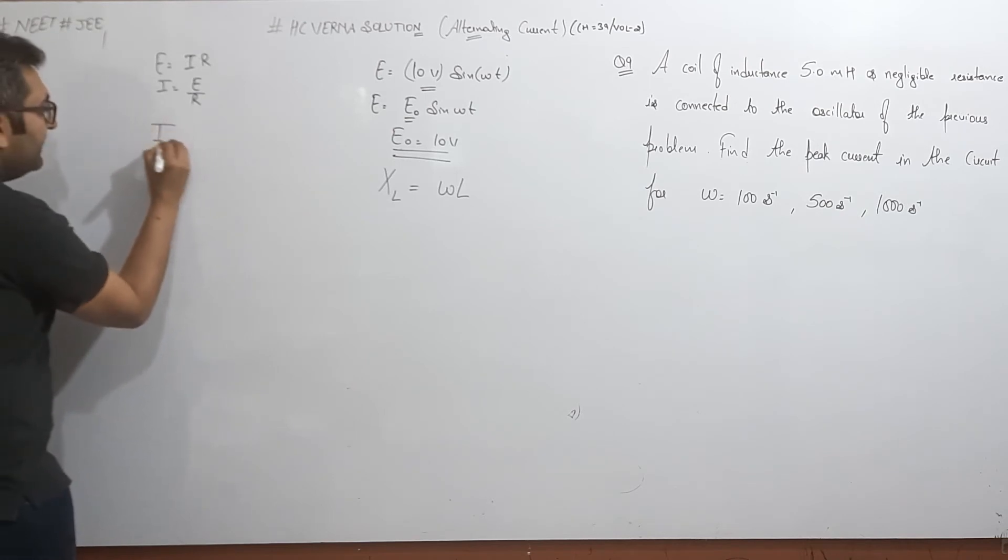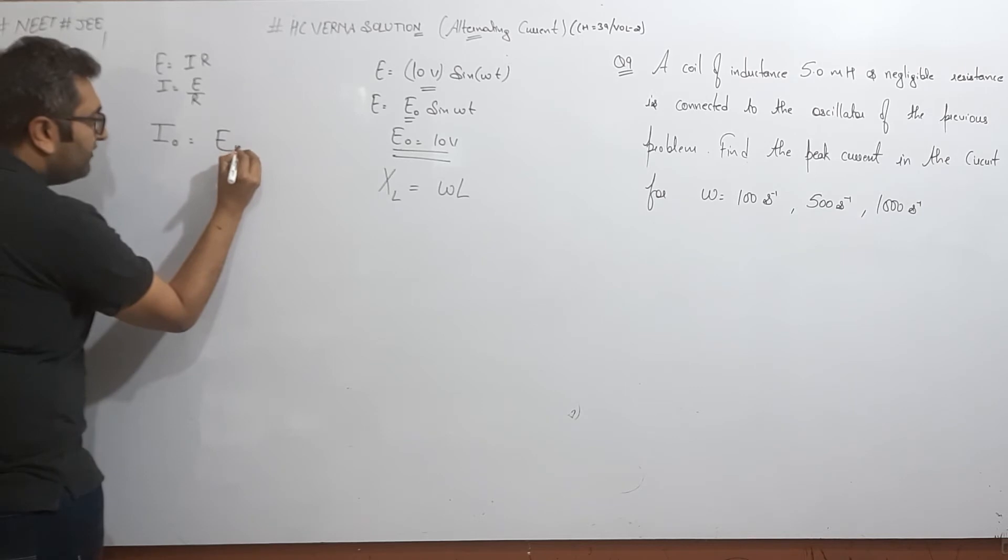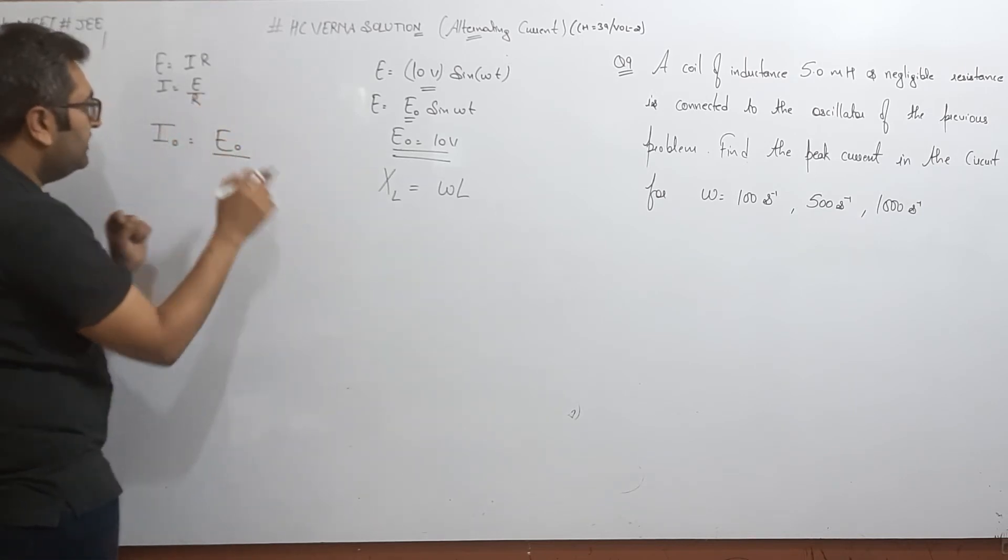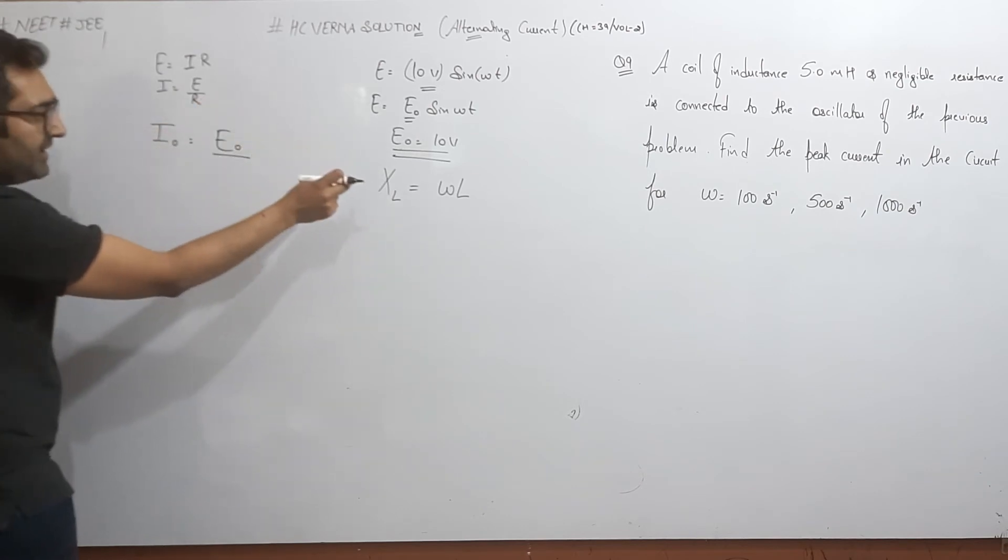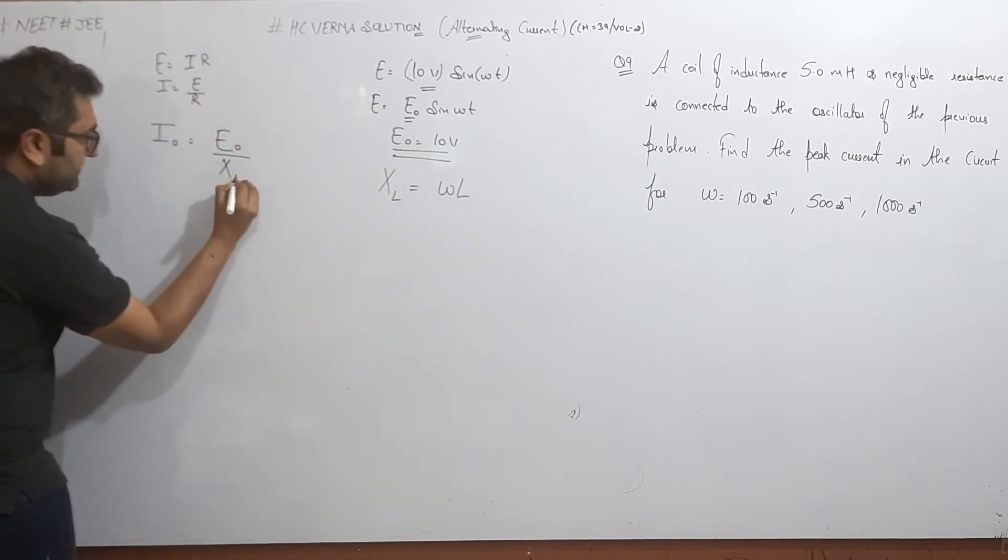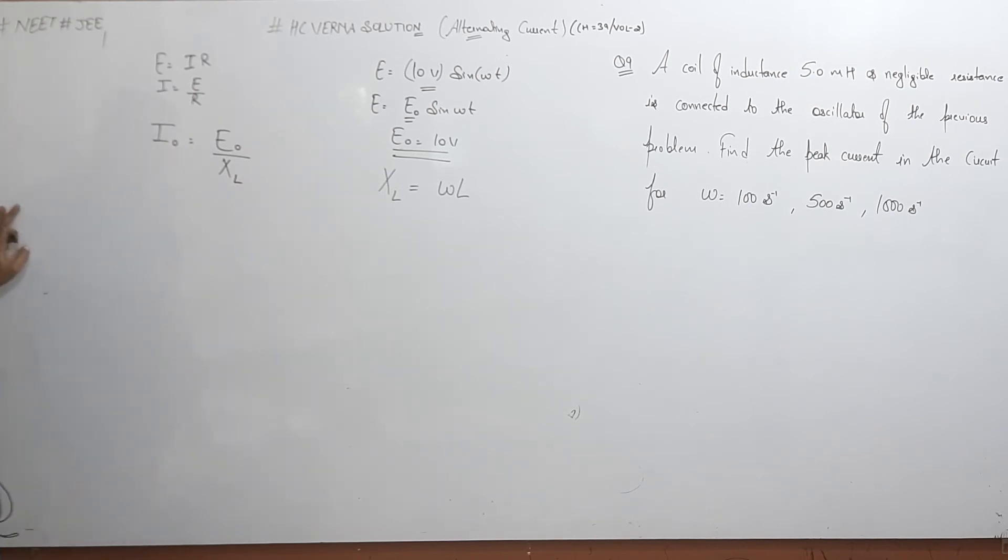And here we have to remove peak current. So peak current ke liye aapko voltage le leni padegi, peak voltage, aur jo resistance current ko rokne wala hai, that will be the resistance. Isko aap kya bol rahe, inductive reactance. Wo yahan par aa jayega resistance ki jagah. That will be XL.